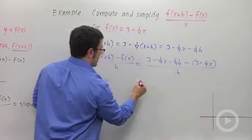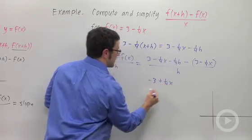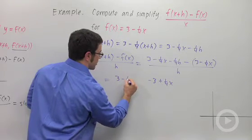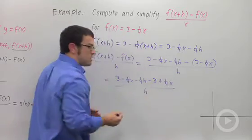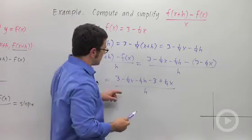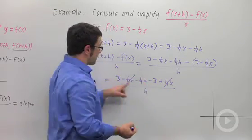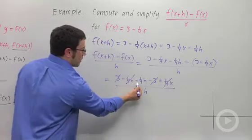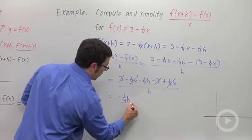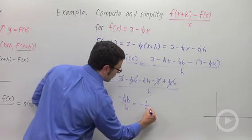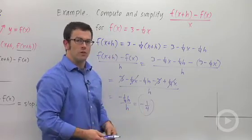Now, I'll distribute the negative sign. I get minus 3 plus 1 quarter x. And over here, I'll get 3 minus 1 quarter x minus 1 quarter h all over h. And you see that there's going to be some cancellation. The minus 1 quarter x and the plus 1 quarter x cancel. And the 3's cancel. And you're left with negative 1 quarter h over h. And that's negative 1 quarter. So, the difference quotient simplified to negative 1 quarter.